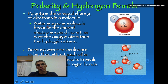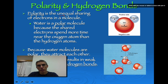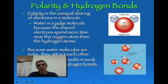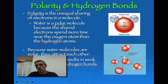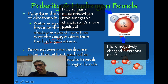Water has a couple of characteristics that make it unique. One is its ability to be polar. Polarity is essentially the unequal sharing of electrons in a molecule. Water is a polar molecule because the shared electrons tend to spend more time near the oxygen atom as opposed to the hydrogen atoms. If you look over on the right-hand side, you can see that the molecule tends to be more positive on the hydrogen side and more negative on the oxygen side.